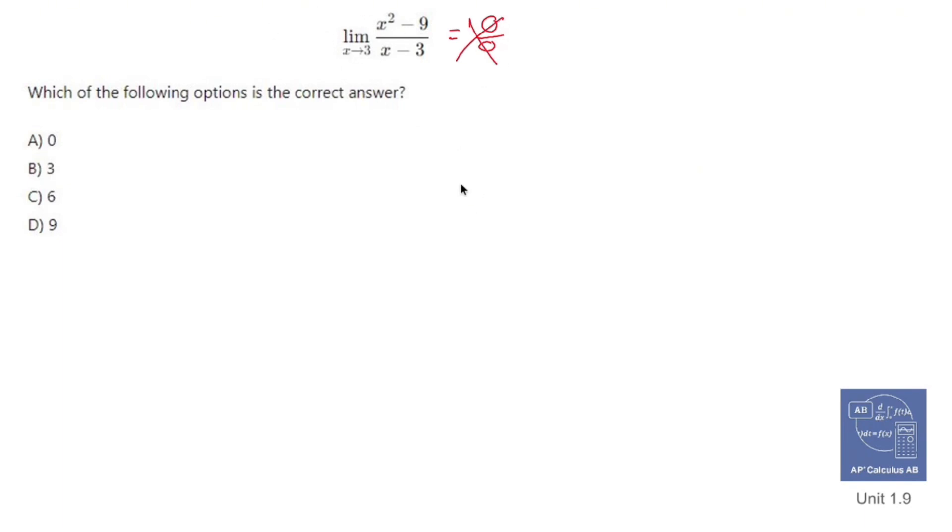So what I have to do is I have to factor the top because it's a difference of squares. x plus 3, x minus 3 over x minus 3. The factors of x minus 3 cross out.